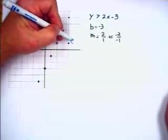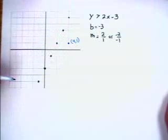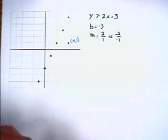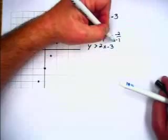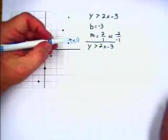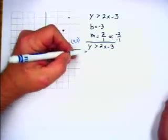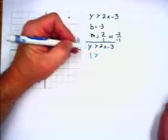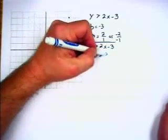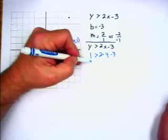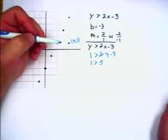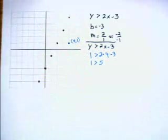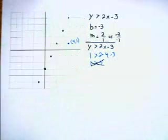This point is 4 comma 1. Starting with the inequality y is greater than 2x minus 3, we put in 4 for x and 1 for y. That gives us 1 is greater than 2 times 4 minus 3, which means 1 is greater than 8 minus 3, or 1 is greater than 5. That is false, so this point does not meet the requirements of the inequality.